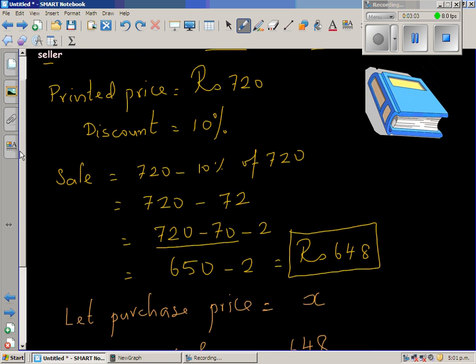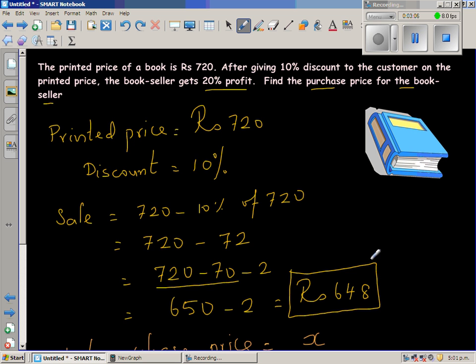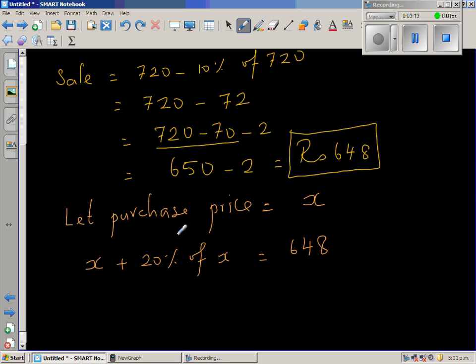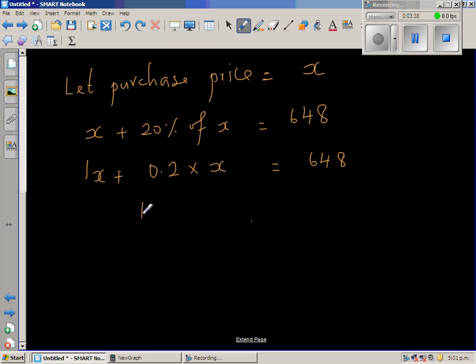So 648 means that even when the bookseller is selling at 648 rupees, he's having a profit of 20%. So if the purchase price is x, you add 20% of x onto that, you get 648. So I'll write x as 1x. And 20% is 0.2, of means times x, equals 648. So 1x plus 0.2x equals 648. So 1.2x equals 648.